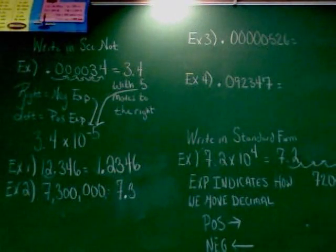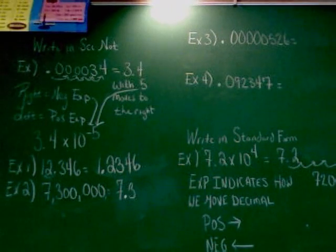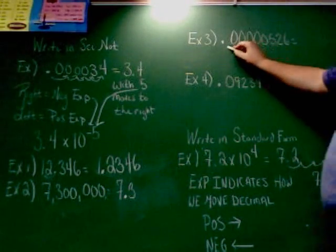This one up here. Point 00000526. A decimal, five zeros, 526. What number does the decimal go after? Elaine? Five. Goes after the five. Right.